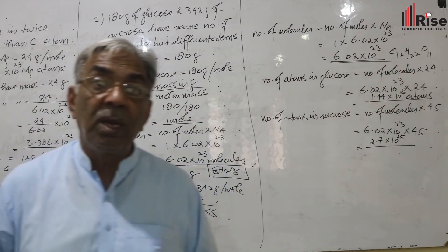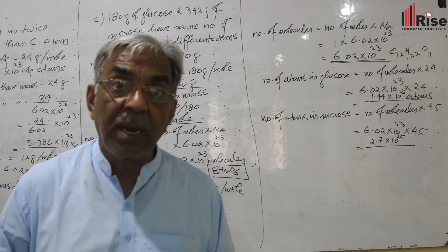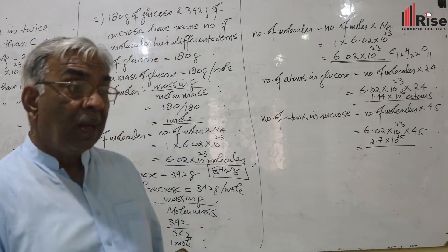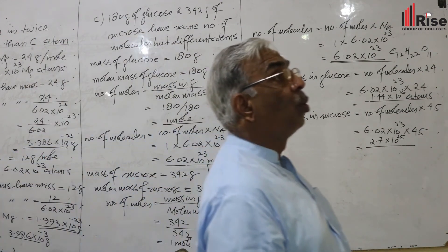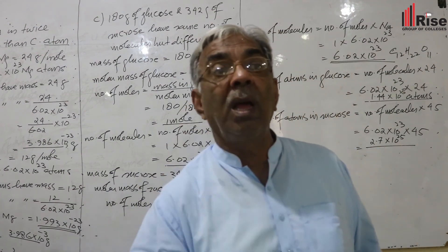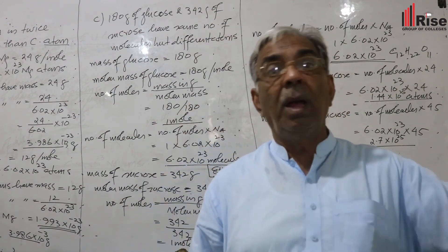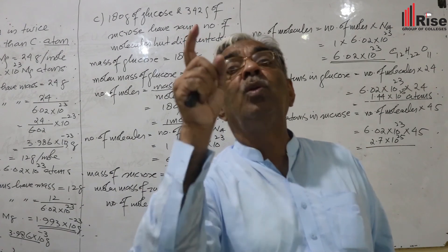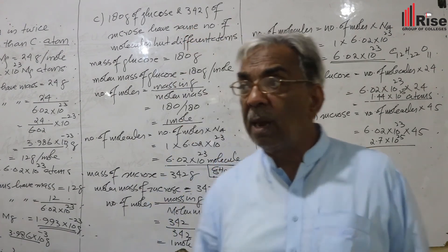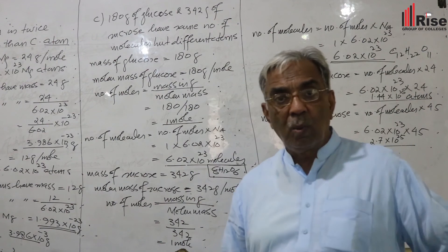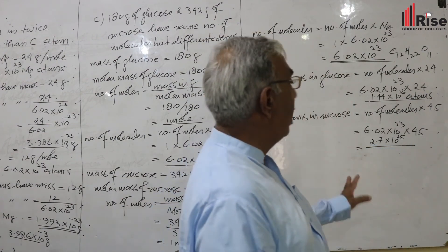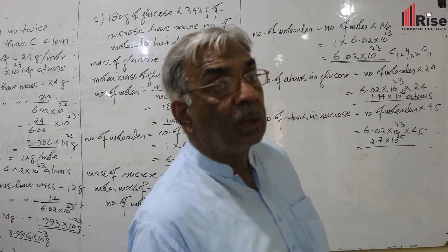Sucrose has 45 atoms per molecule. Number of atoms equals number of molecules multiplied by 45. Glucose has 24 atoms per molecule, sucrose has 45 atoms per molecule, so different number of atoms but same number of molecules.